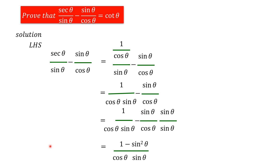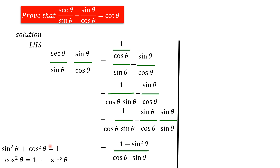Next, we have to convert 1 minus sin squared theta to cos squared theta by using a trigonometric identity. That identity is sin squared theta plus cos squared theta equals 1. Bringing sin squared theta to the right hand side, we get cos squared theta equal to 1 minus sin squared theta.